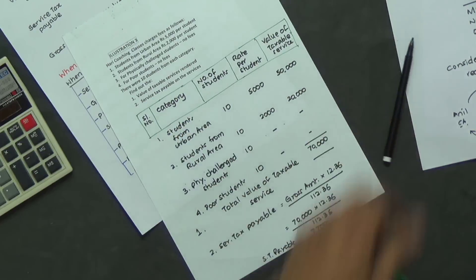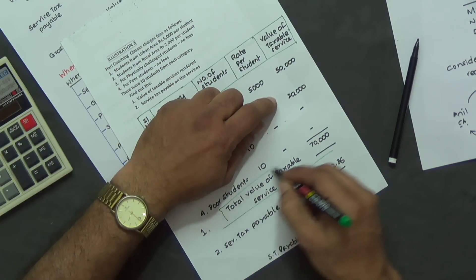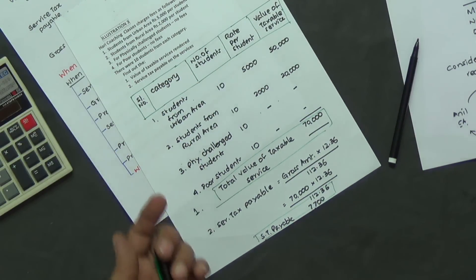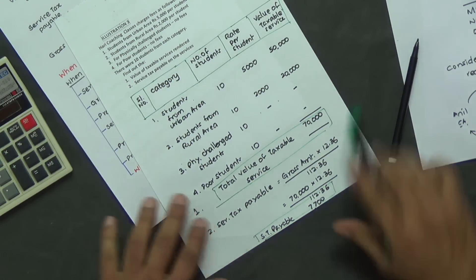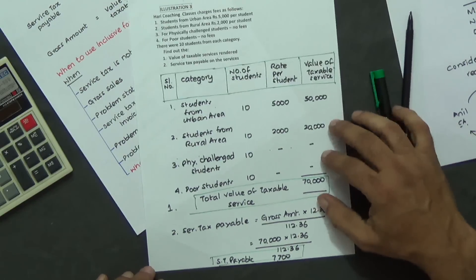So we have worked out both the things. Value of taxable services and service tax payable. So we have solved this question. Both the items have been solved.